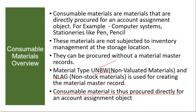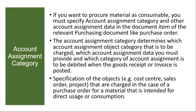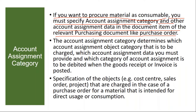Consumable materials are procured directly for an account assignment object. Since there is no stock, the value has to be posted to an account assignment. If you want to procure materials as consumable, you must specify the account assignment category and other account assignment data in the document item of the relevant purchasing document. Whenever you want to purchase a consumable material in the PR or PO, you need to mention the account assignment category, and once you enter that, you have to enter the relevant account assignment data.